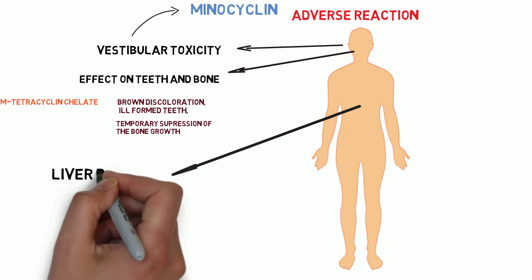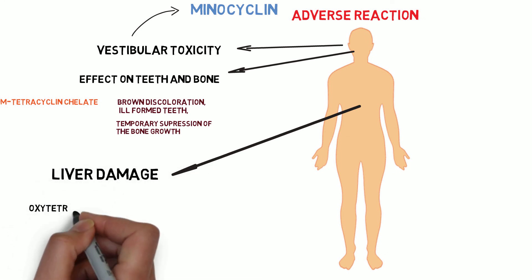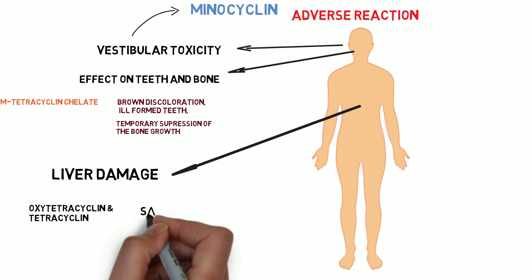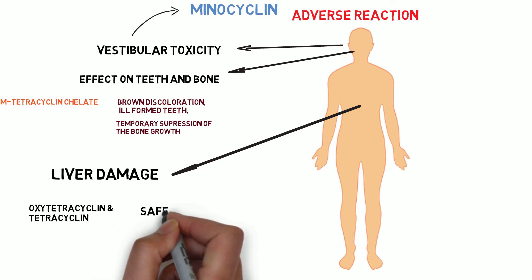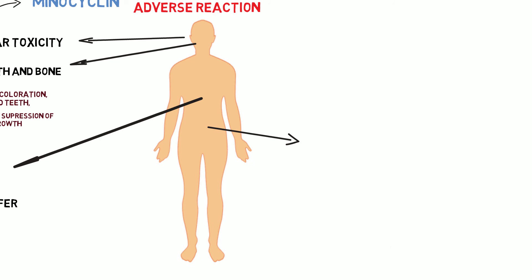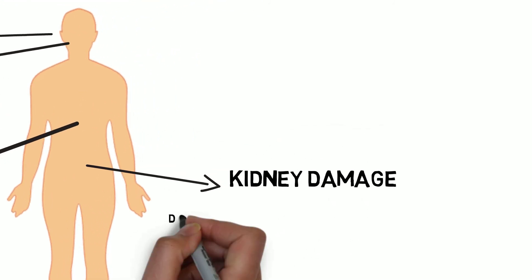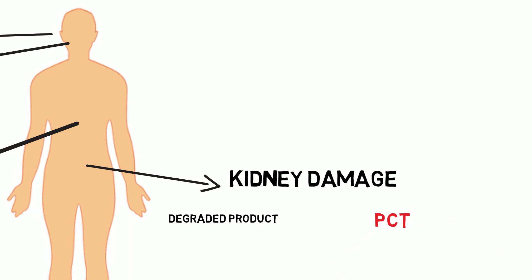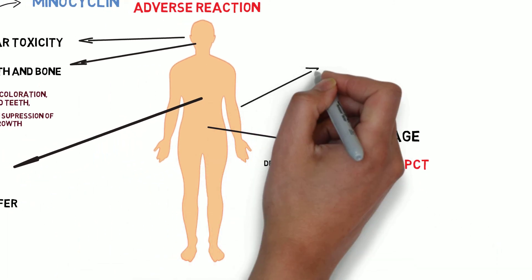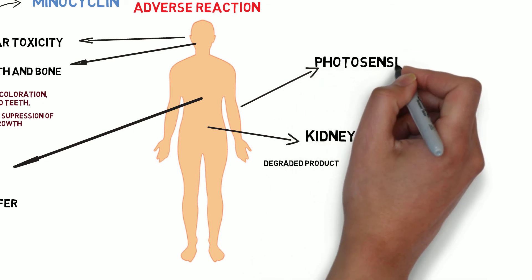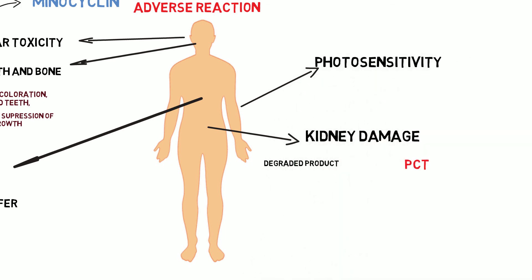Tetracycline also causes liver damage; however, drugs such as tetracycline and oxytetracycline are considered safer. It also causes kidney damage because the degraded products of tetracycline affect the proximal convoluted tubules. Additionally, tetracycline causes photosensitivity.